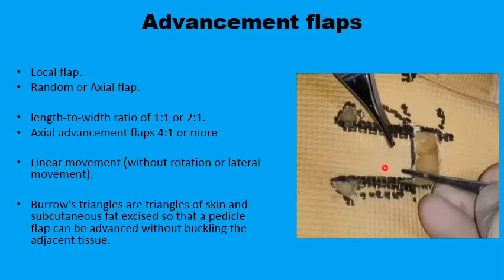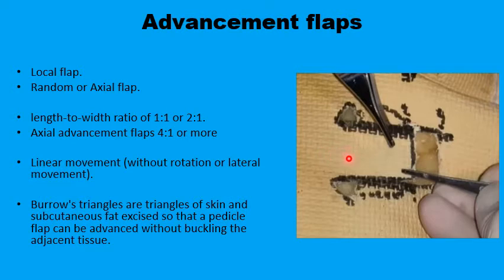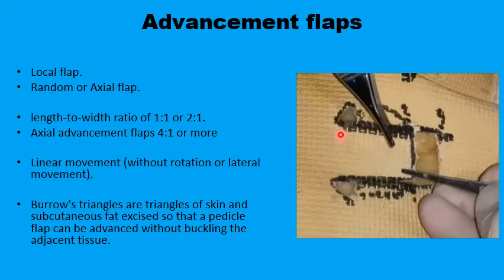Advancement flaps are local flaps taken from tissues around a defect that cannot be closed primarily, so you are recruiting tissues from its side to fill it up. If these tissues are moved directly in a linear way to fill up the defect, they are termed advancement flaps. They can be either random or axial flaps. If it is random, its blood supply comes only through its base and through the perforators of the musculocutaneous arteries, which is reduced because you have incised the sides and the leading edge of the flap. So the length-to-breadth ratio should remain within one to one in most areas of the body, or two to one in the face, head, and neck where you have better vascularity.